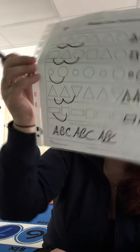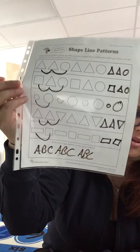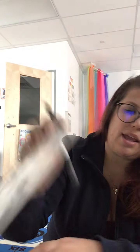We can even do a pattern with letters. We'll do ABC: A, B, C — A, B, C — A, B, C. See this pattern? The next one would be A, B, C.